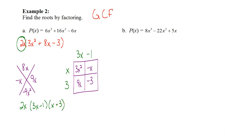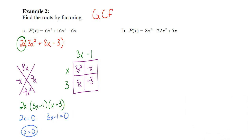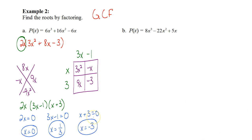Our goal is to find the roots by factoring, so now we set each factor equal to zero. Setting 2x equal to zero gives x equals 0. Setting (3x minus 1) equal to zero: add 1 and divide by 3, giving x equals one-third. Setting (x plus 3) equal to zero: subtract 3 from both sides, giving x equals negative 3. So the roots or zeros of that polynomial are 0, one-third, and negative 3.